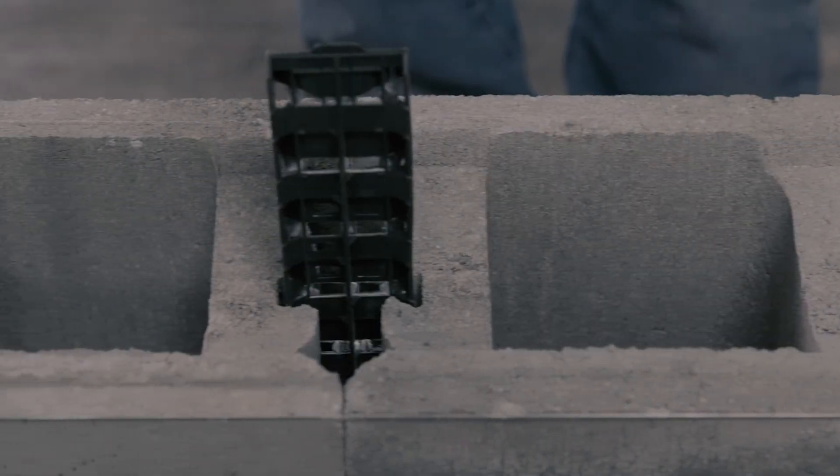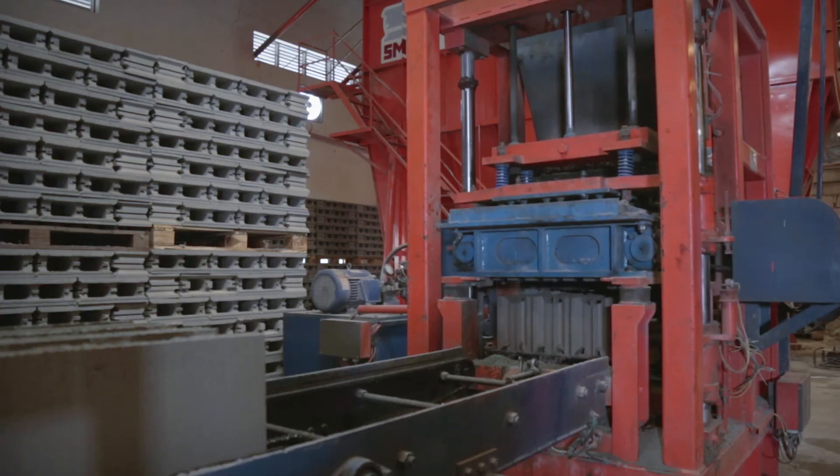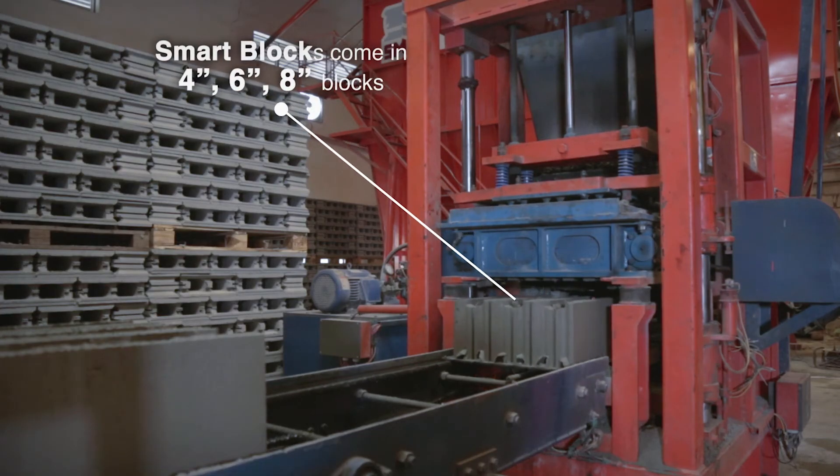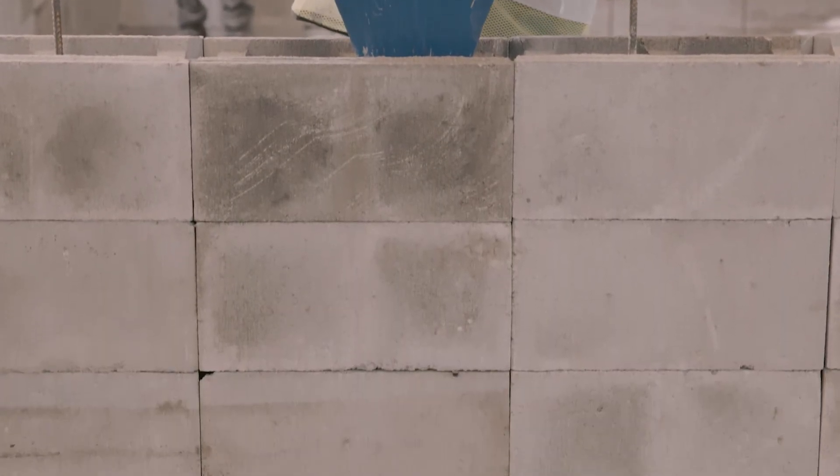you get to build a good wall significantly faster than with regular CHB construction. I like the idea that I can choose between a couple of thicknesses, 120s, 150s, 200s. It's nice to work with those thicknesses so I can be able to hide the columns and beams.